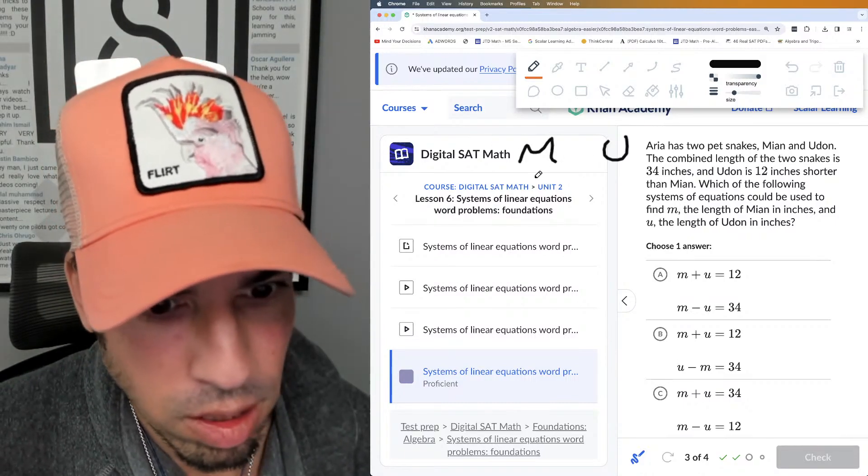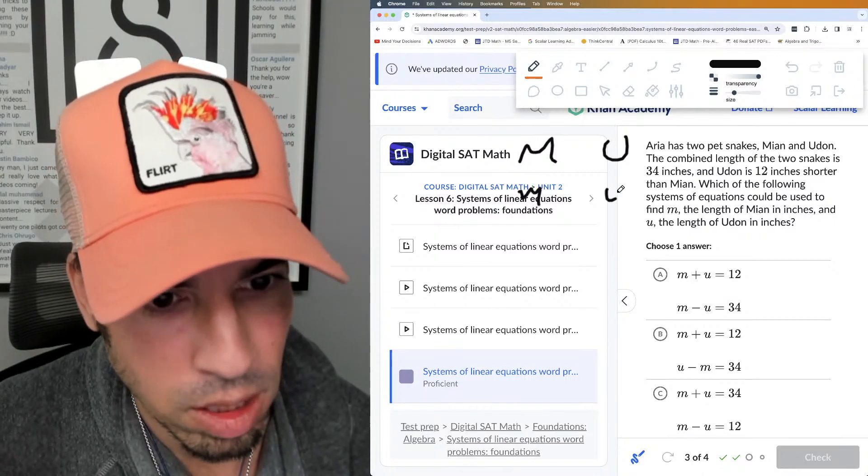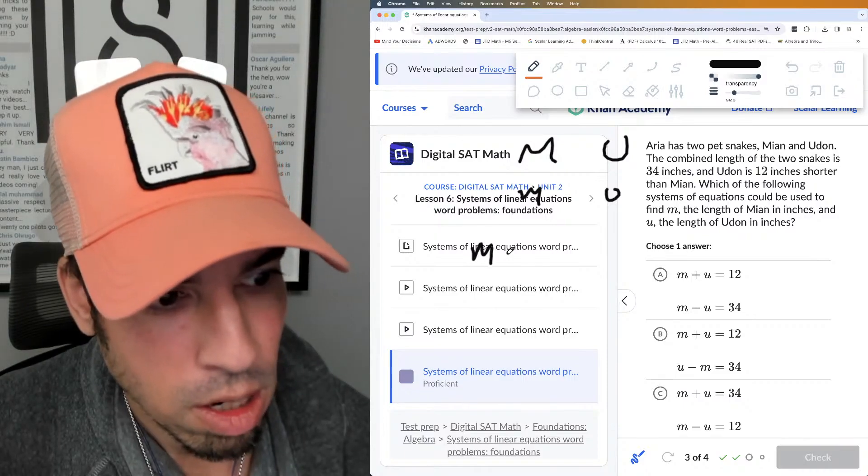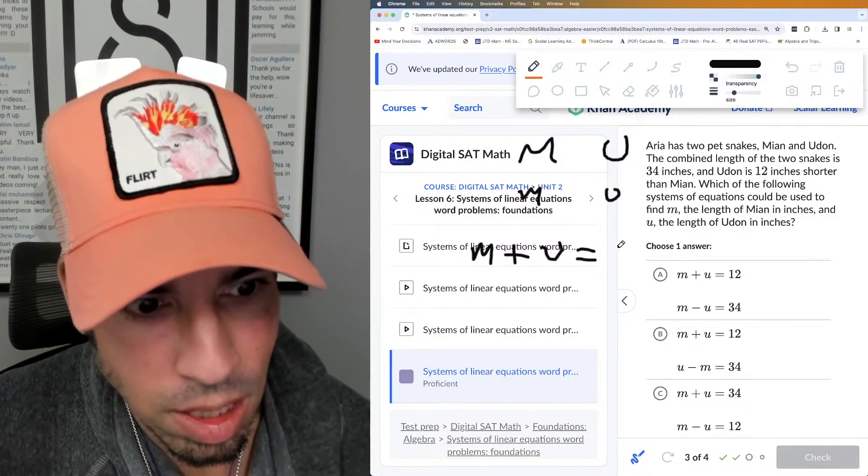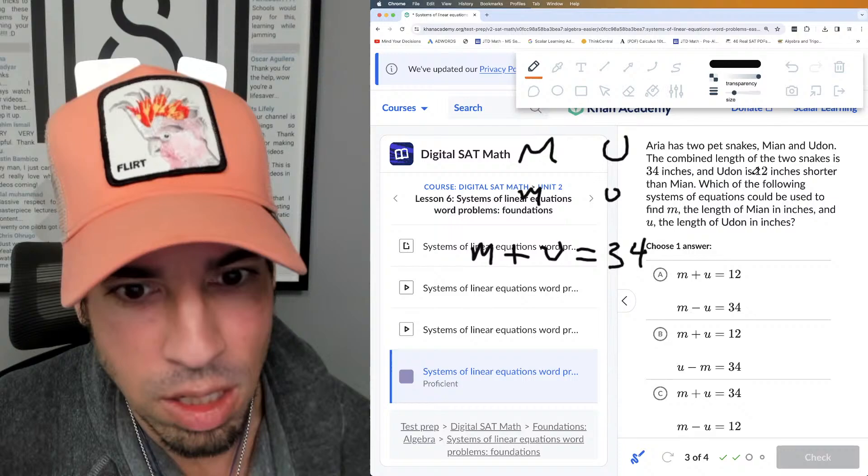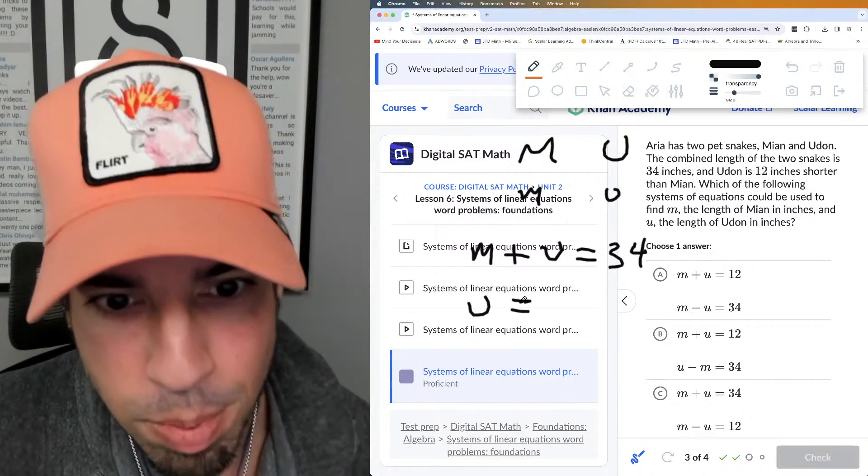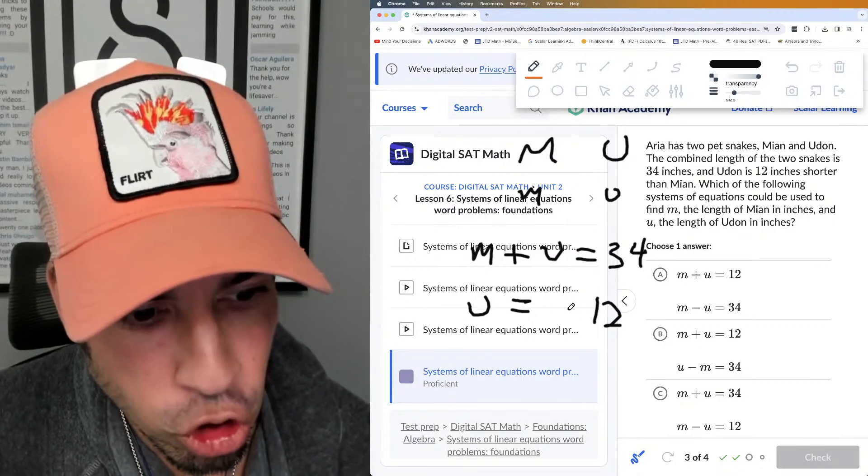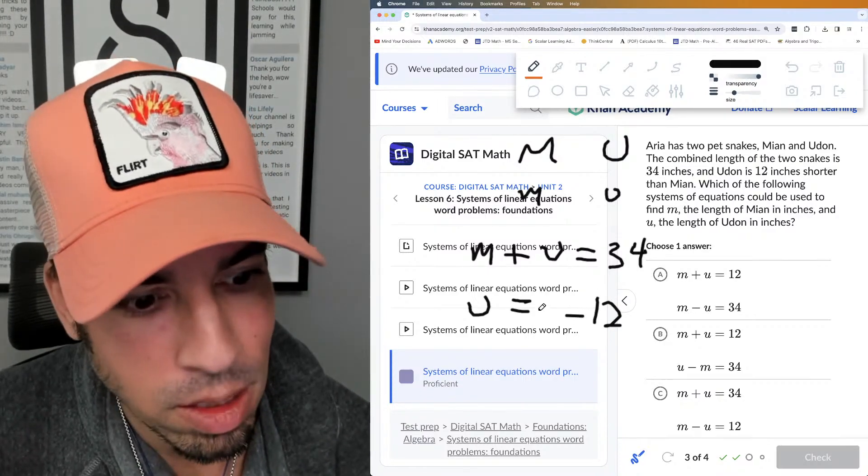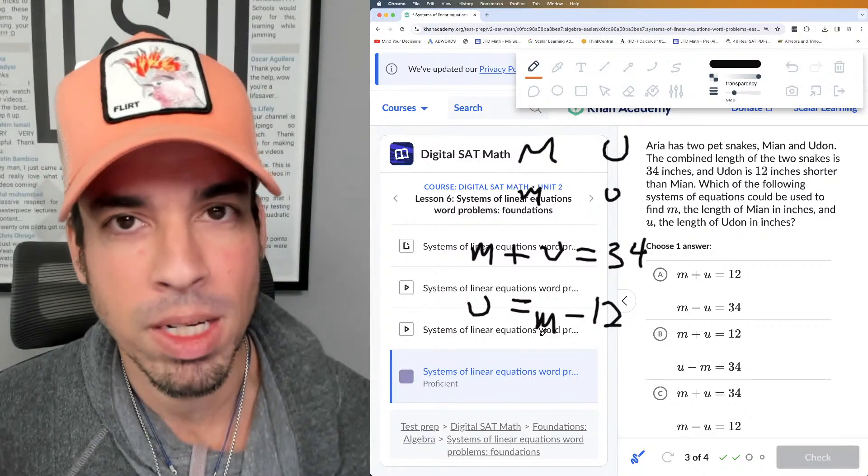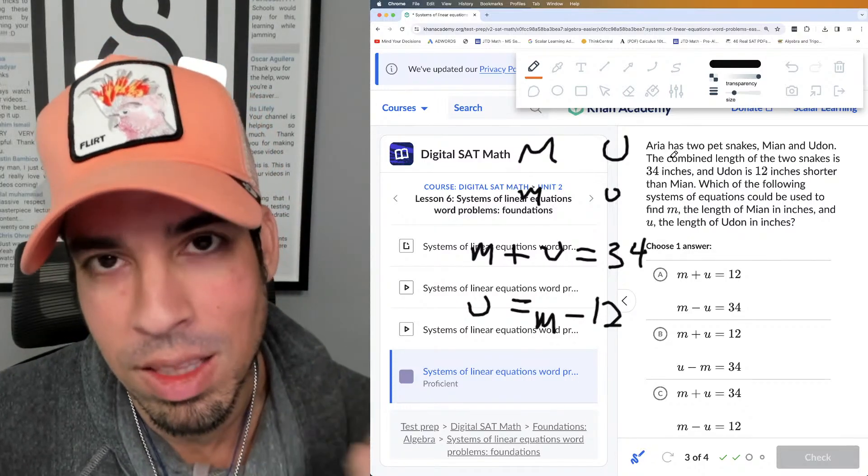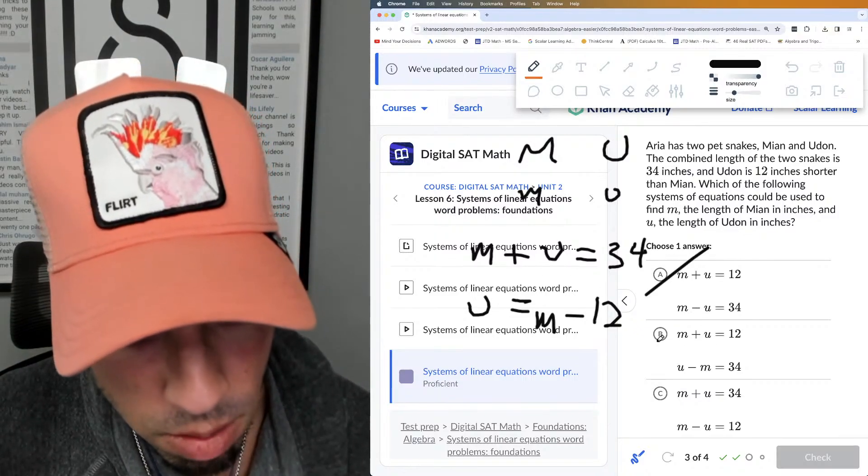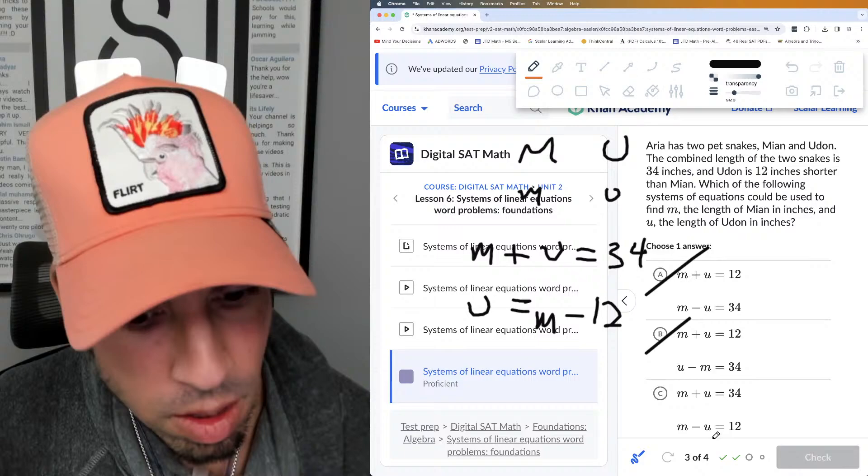Okay, here we go. Aria has two pet snakes, Mian and Udon. The combined length of the two snakes is 34 inches, and they got variables m and u. I can see in this, so the combined length is 34 inches, so watch this: combined length, meaning adding them together, is 34. The other one, it says Udon is—that's my to be verb, that's my equal sign—is 12 inches shorter, that's less or minus, than m. Boom, I got my system of equations just from reading it and thinking it through logically.